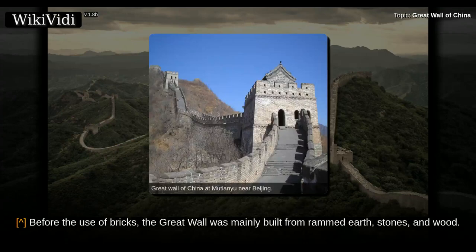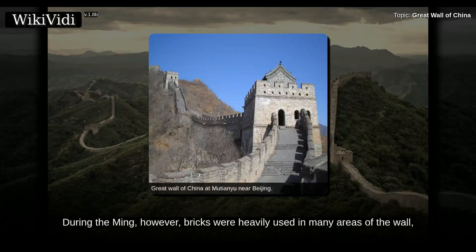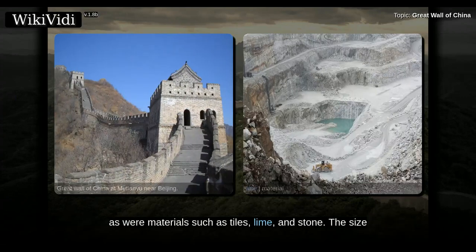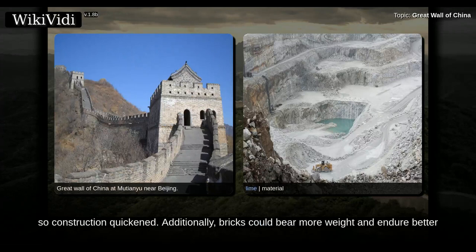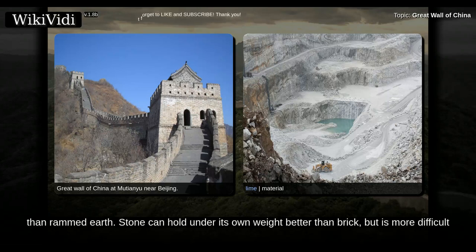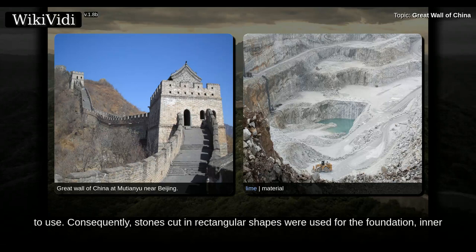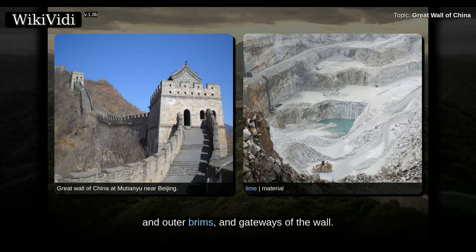Before the use of bricks, the Great Wall was mainly built from rammed earth, stones, and wood. During the Ming, however, bricks were heavily used in many areas of the wall, as were materials such as tiles, lime, and stone. The size and weight of the bricks made them easier to work with than earth and stone, so construction quickened. Additionally, bricks could bear more weight and endure better than rammed earth. Stone can hold under its own weight better than brick, but is more difficult to use. Consequently, stones cut in rectangular shapes were used for the foundation, inner and outer brims, and gateways of the wall.